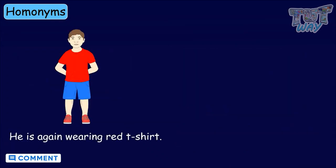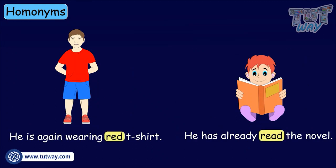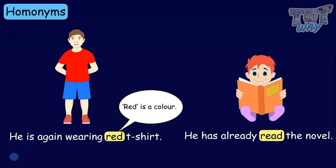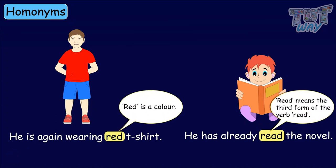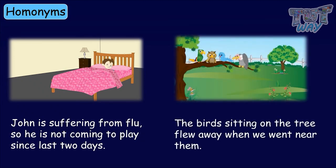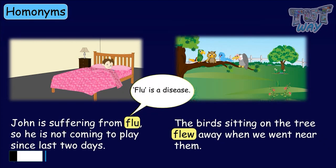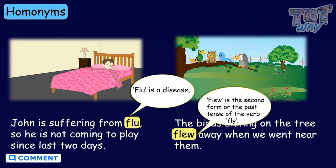He is wearing a red t-shirt. He has already read the novel. Red and read sound similar — one means the color red, and the other refers to the past tense of the verb read. John is suffering from flu, so he is not coming to play since last two days. The bird sitting on the tree flew away when we went near them. Flu and flew sound similar — the first flu is a disease, and flew is the past tense of the verb fly.